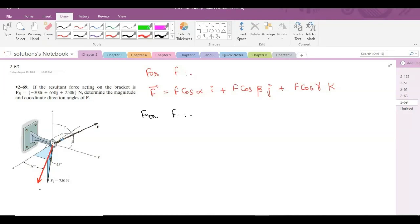Let's label this projection. It is F1 cos 45 degrees. So F1 cos 45 is the projection of force F1 on the xy plane.